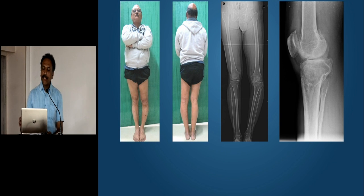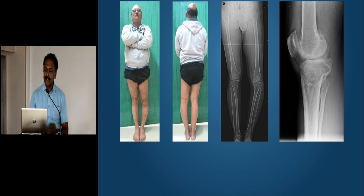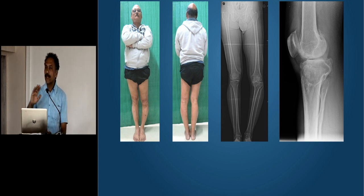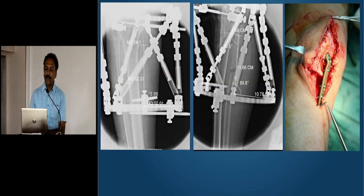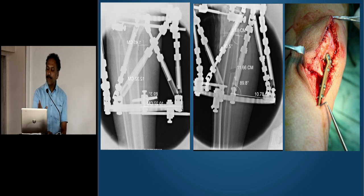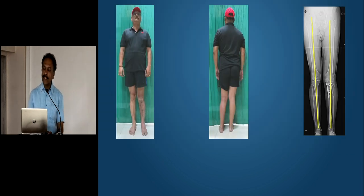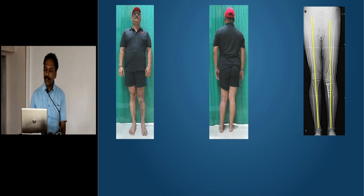Finally, let's look at fixator-assisted plating. A hotshot businessman drives a Mercedes, doesn't want a fixator, has a large deformity with some shortening — he says he doesn't care about a centimeter of shortening. So we do fixator-assisted plating: put on the TSF fixator on the table, do the calculations with the help of the fixator, then go in and put in a medial Tomofix plate. He can attend to his business within two weeks and is rewarded with a very good result with the acceptable compromise of a little shortening.